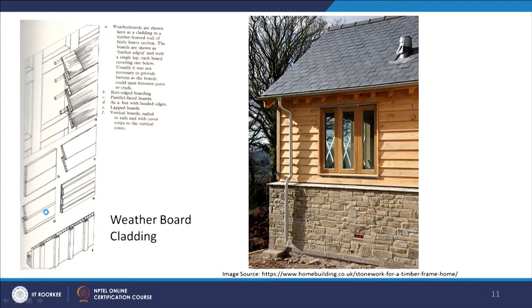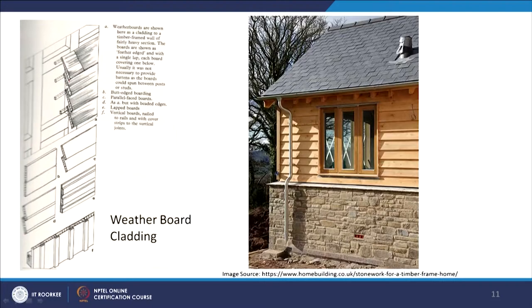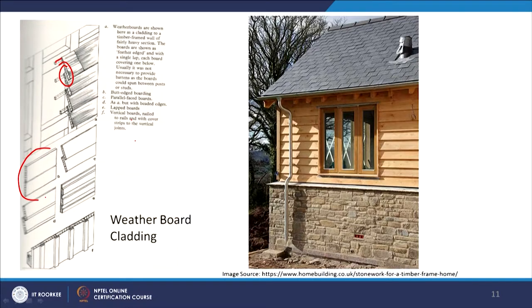Weather board cladding is also used. This technique has been common from the 17th and 18th centuries, though nowadays modern construction uses polypropylene sheets or similar materials. You have battens with a single lap — just covering one below. There is a butt joint and a lap joint variation. You also see parallel-faced boards with a slight lap, a butt joint with a beaded edge, and lapped boards — each with different sectional profiles for aesthetic purposes.